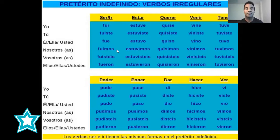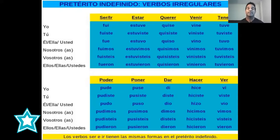It's not the same if you say, for example, 'ayer fui a la discoteca con mis amigos' — it's clear that you are using the verb go, meaning yesterday I went to the disco with my friends. Or if you say 'yo fui muy buen estudiante,' that means I was a very good student. Fui as ser.